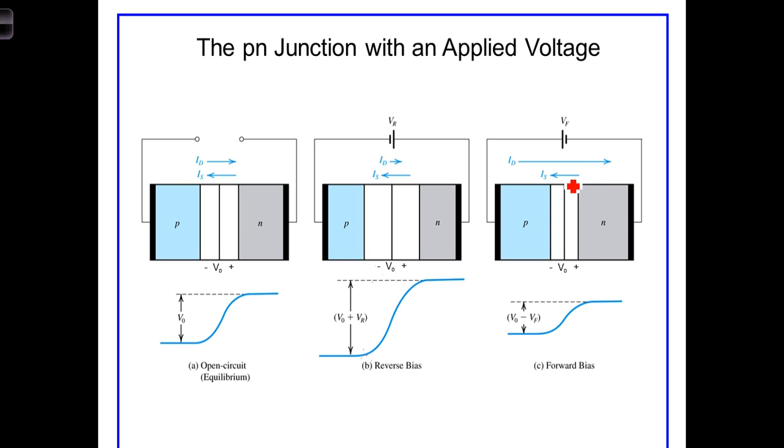Once again, I-sub-S, the drift current component, remains roughly the same, but the overall current is dominated by the diffusion current. The net result of these two is the current we see flowing through the external circuit.